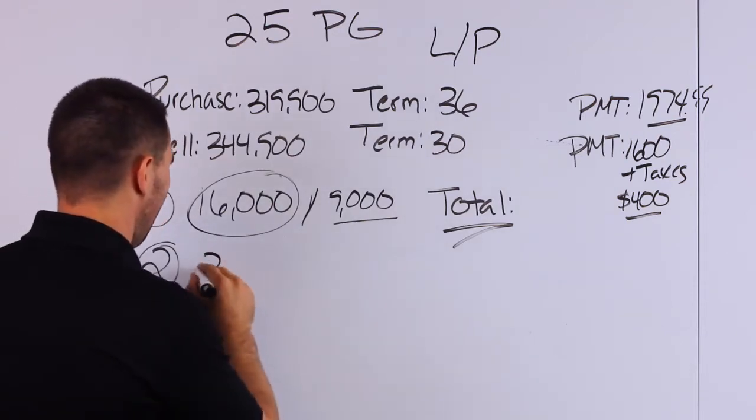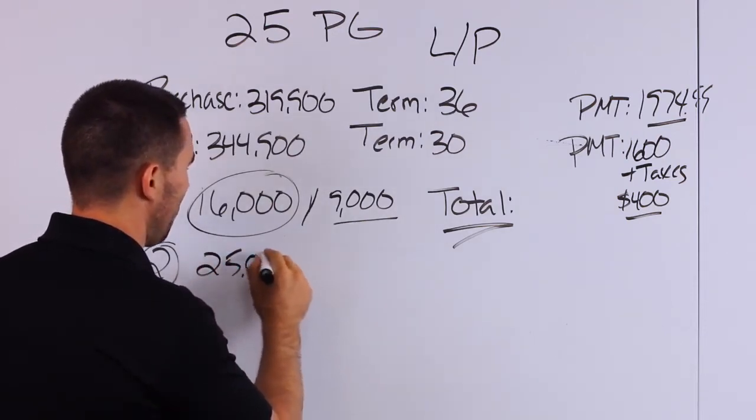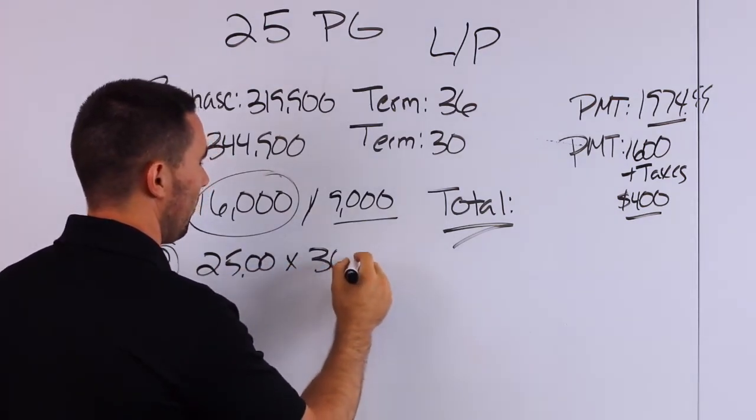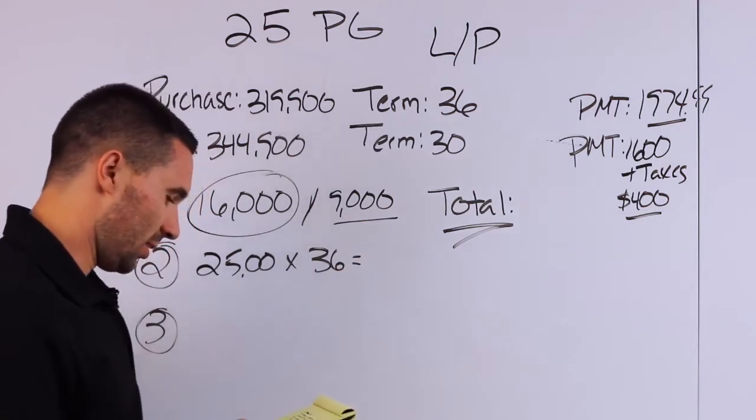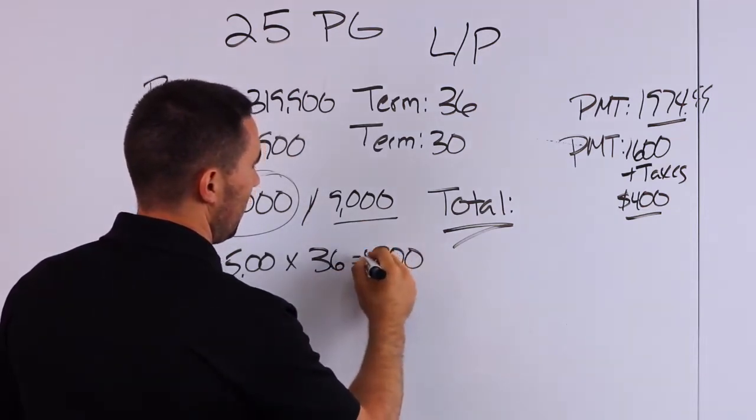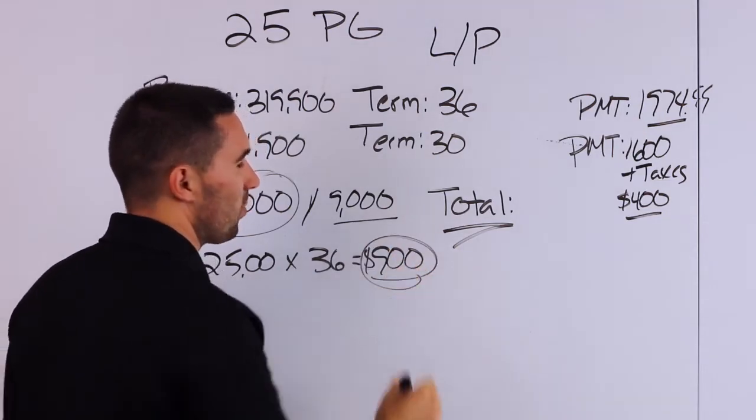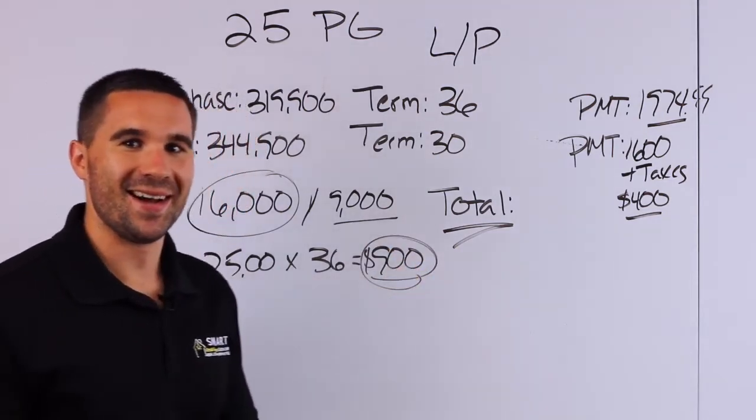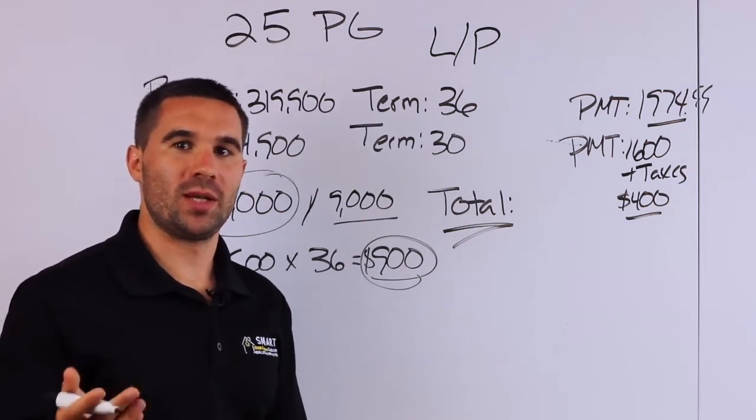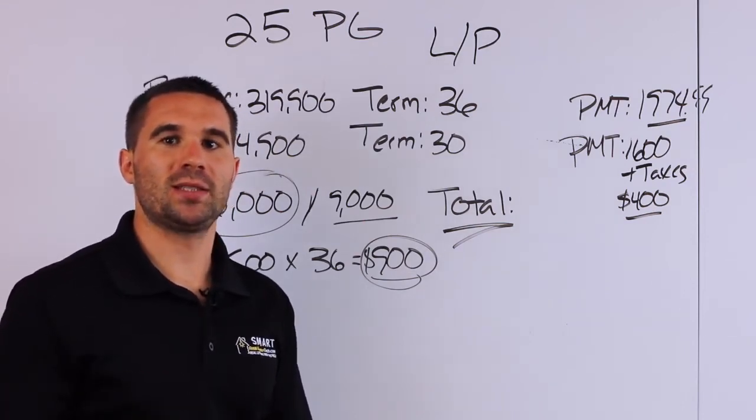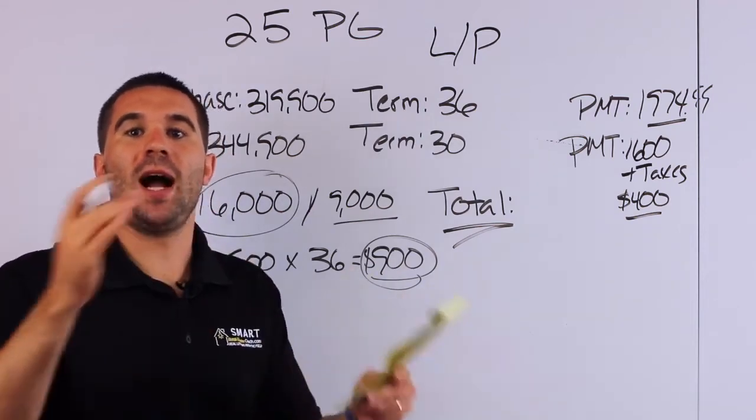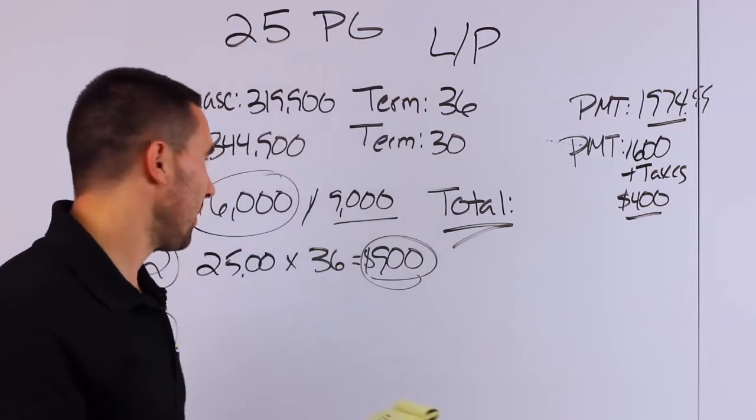We are getting $25 a month in spread. So you times that by, we're going to always base everything on full term. So 36 months, it gives us $900. Not huge spread numbers here, but it ends up being a good deal in the long run. So sometimes you're going to make adjustments and base your judgment on the deal on the entire deal, not just based on one payday.